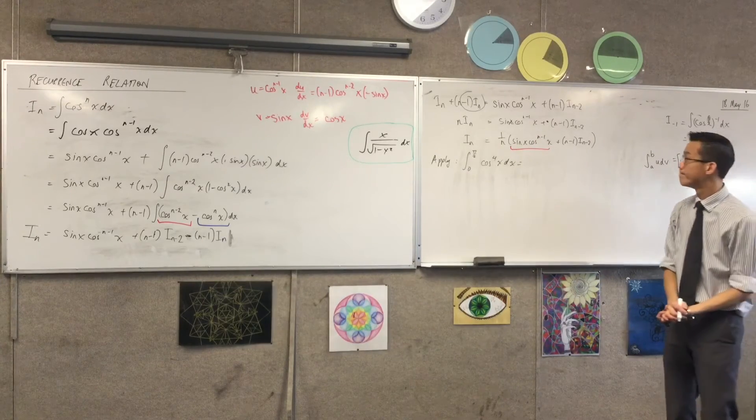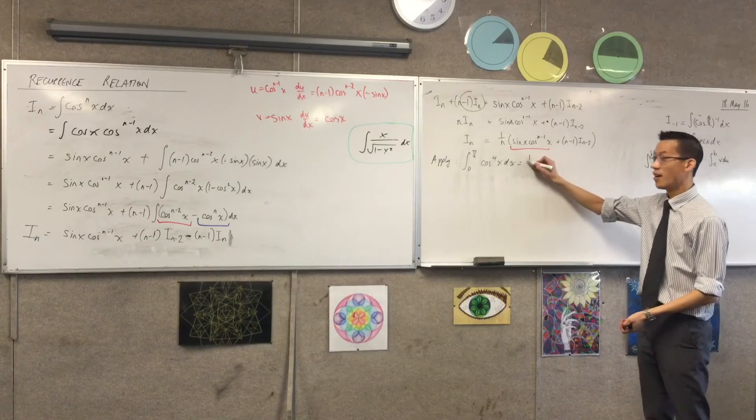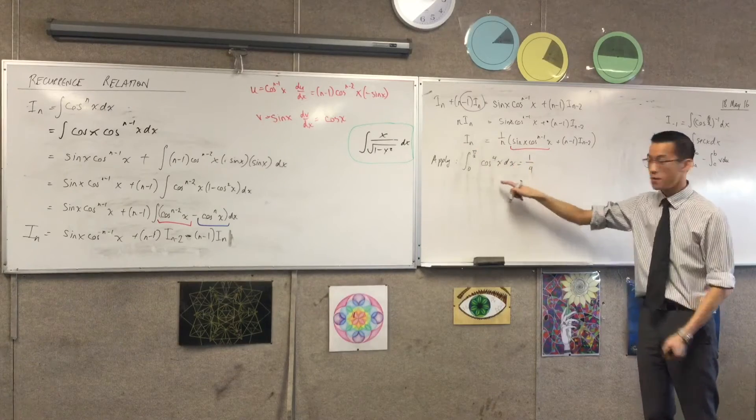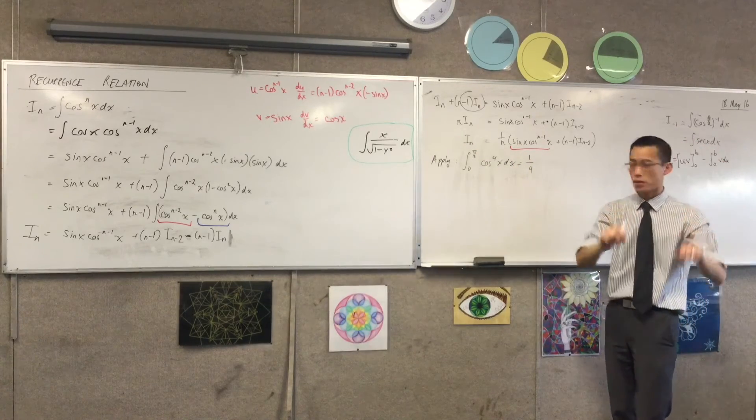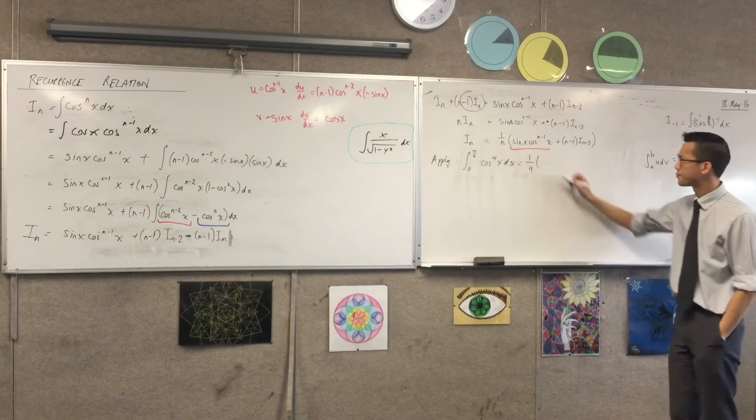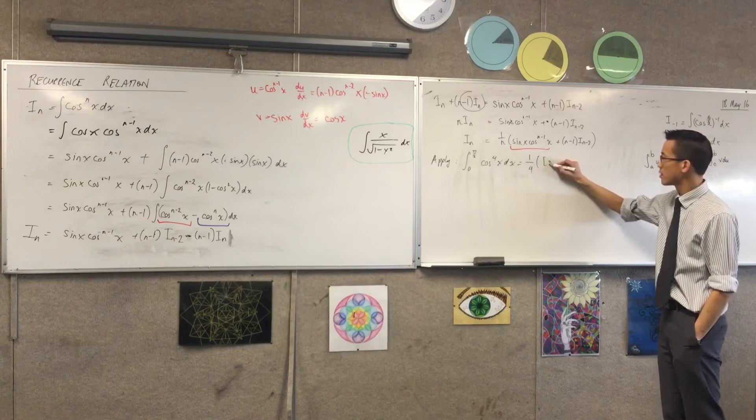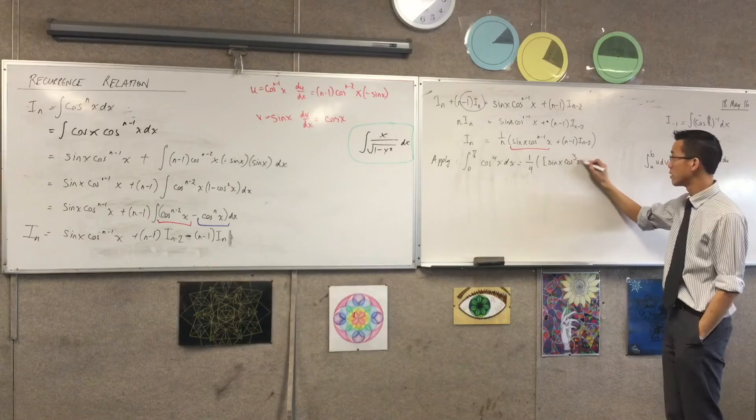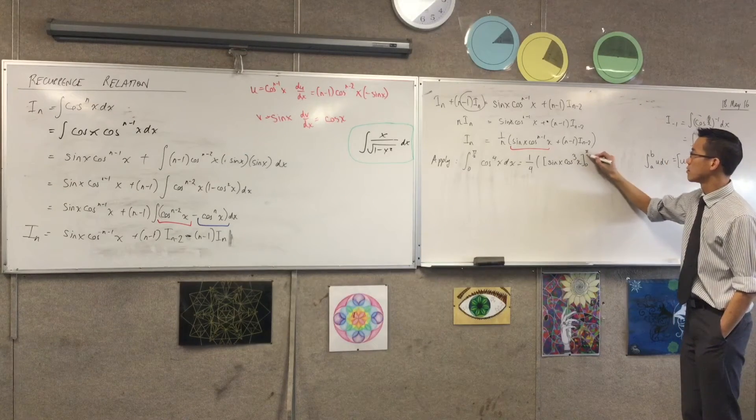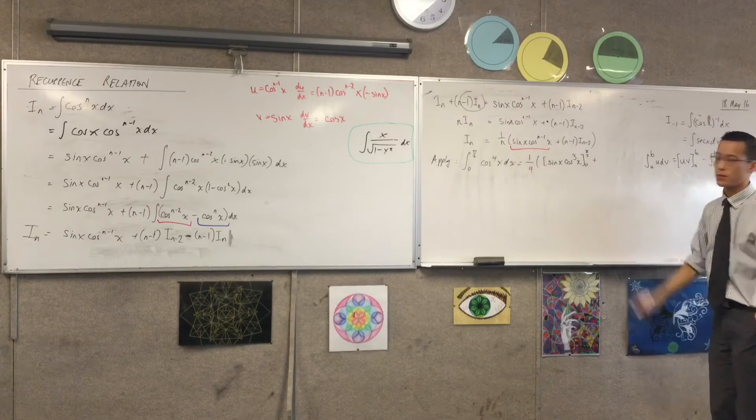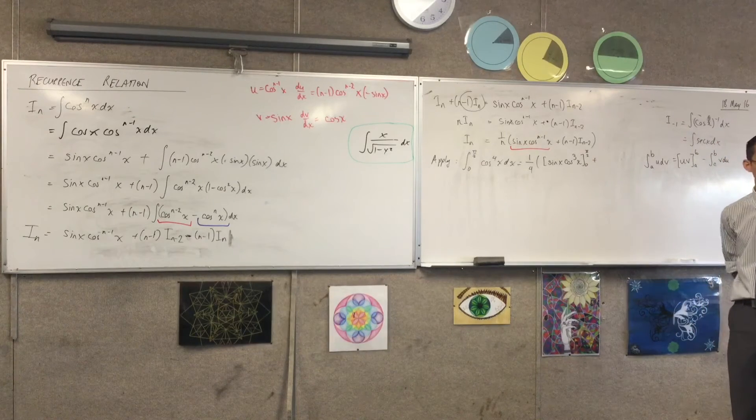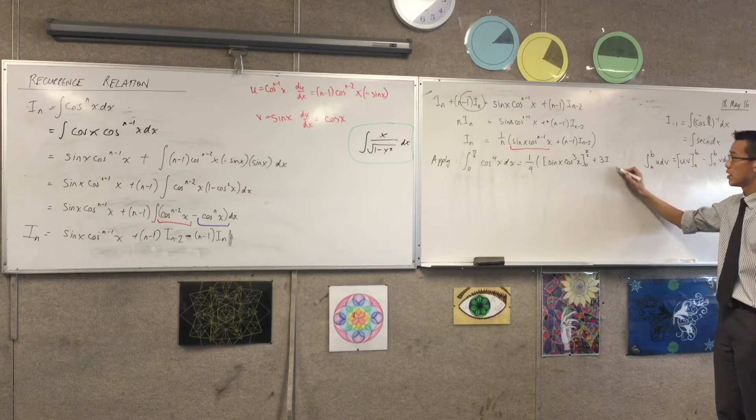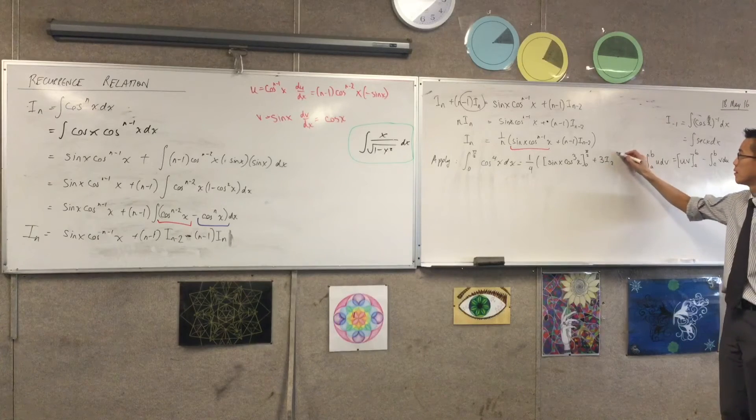What's going to be my first line? 1 over 4, right? I identify my power here, because this is I4 from 0 to π/2, okay? And then what am I getting in here? So I'm going to integrate sin x cos cubed, right? From 0 to π/2, yeah? Plus, what comes next? 3 lots of I2. 4 minus 2, yeah?